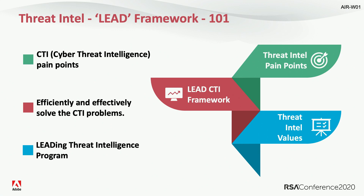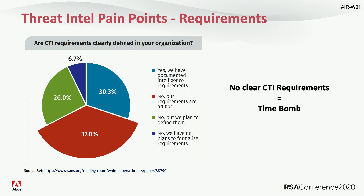Starting with the Threat Intelligence pain points, I'm using the SANS 2019 survey. The latest one was published last week, but the results are not so different — they're proving the same point. First, requirements: 70% of organizations have no clear requirements for Threat Intelligence. In reality, that means Threat Intelligence has been created to serve an ad hoc purpose — solving specific incidents or helping the SOC with some analysis. But on the long run it won't work, because without clear requirements we cannot provide clear value or build Threat Intelligence metrics.